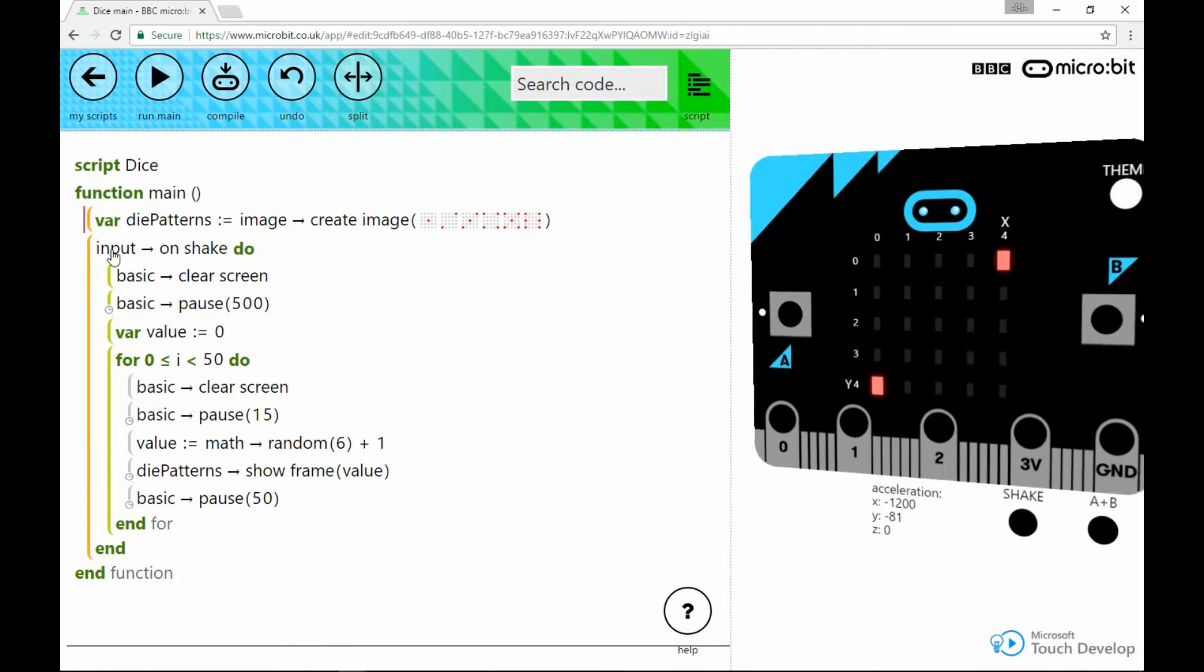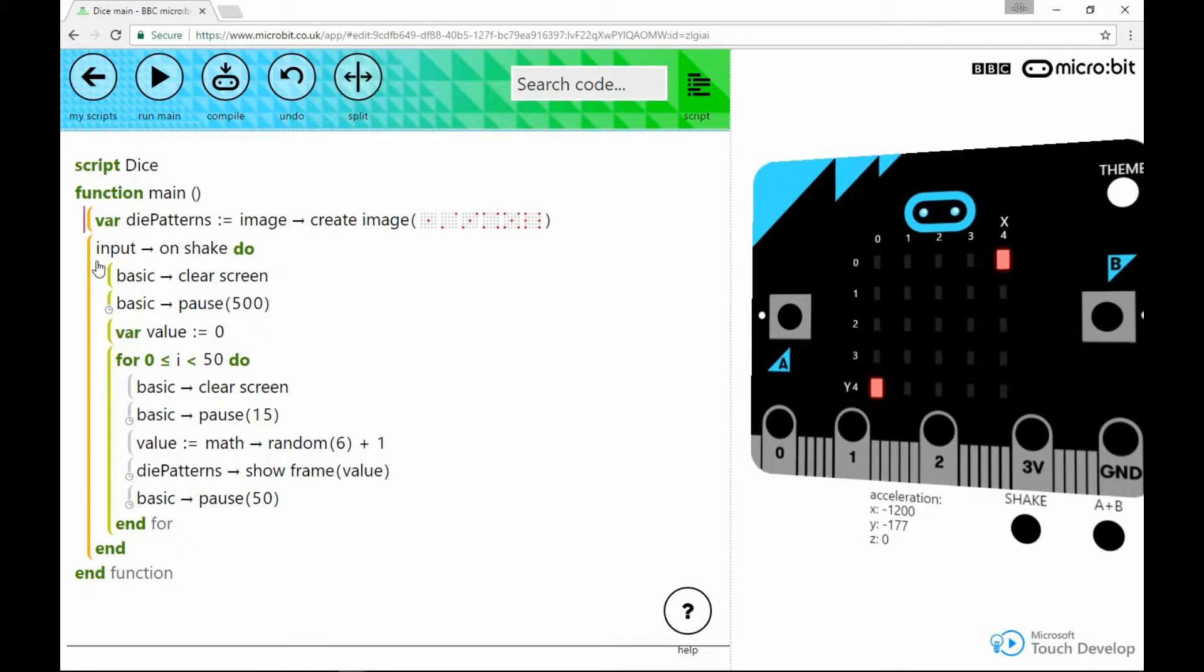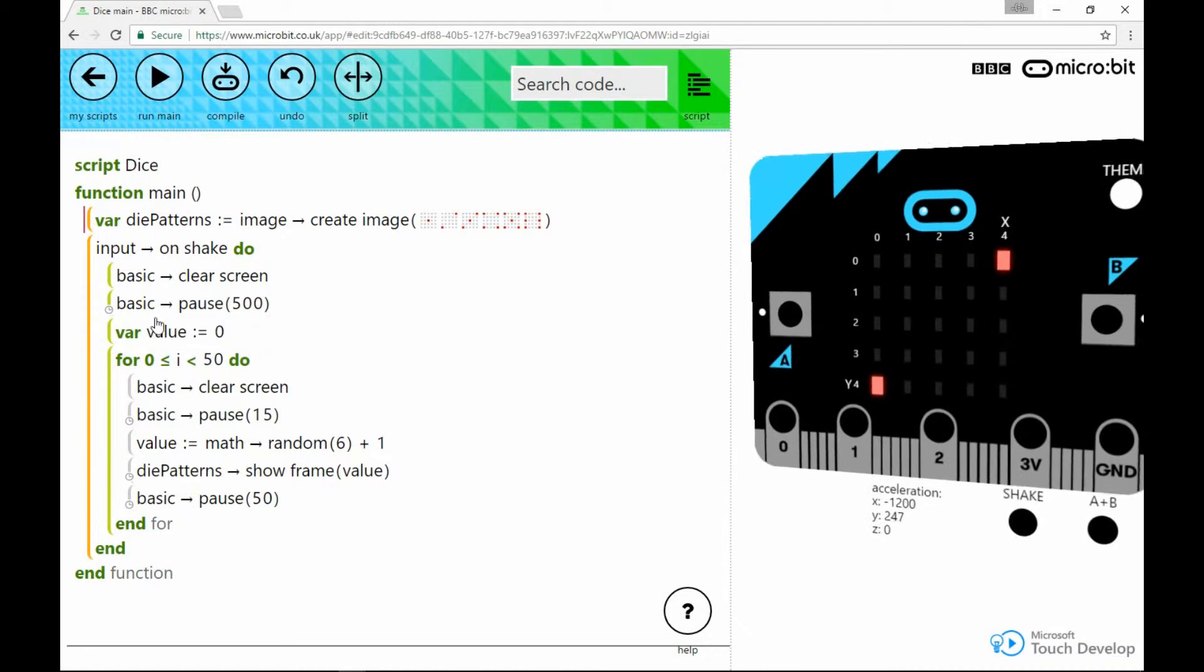So what I've done here is basically I've created a program that runs when you shake the micro:bit. So here we've got on shake. The micro:bit has an accelerometer on board, which is a little chip that can tell when the device is being accelerated. So when you shake the micro:bit, the accelerometer detects this and you can use this to execute some code. This piece of code here is going to run whenever you shake the micro:bit.